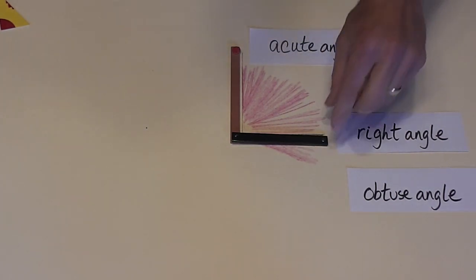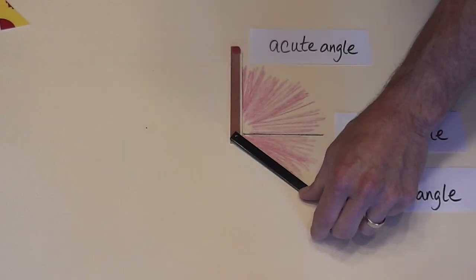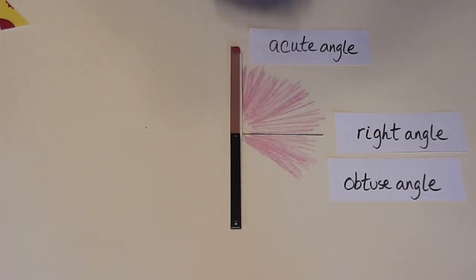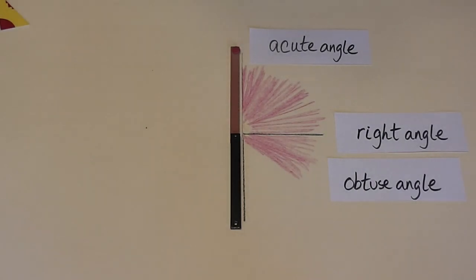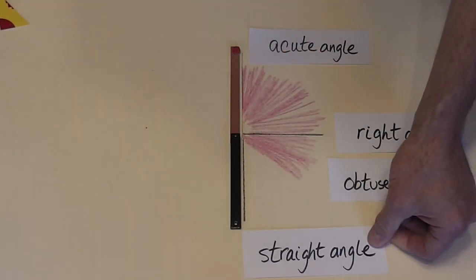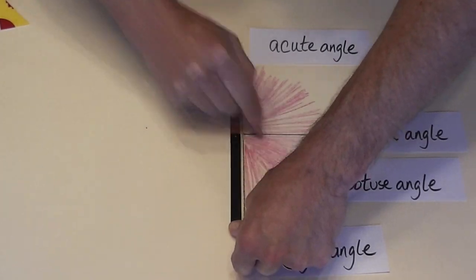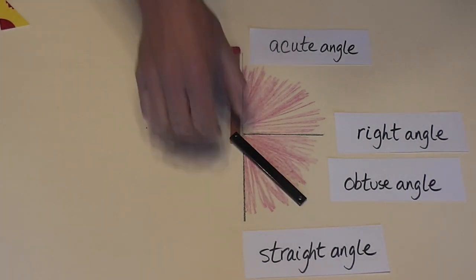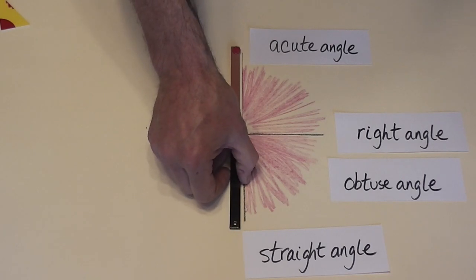I'm going to go beyond the right angle — open up the size some more. And now we've created an obtuse angle. I open it a little bit more — this is also an obtuse angle. I'm going to open it further to form a straight line. When two rays form a straight line, it's called a straight angle.